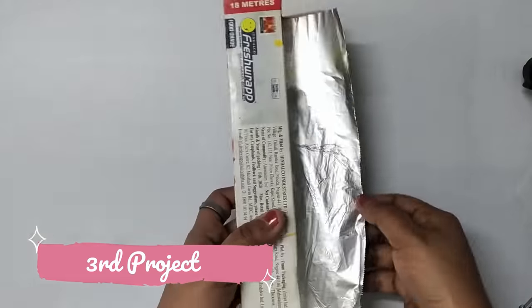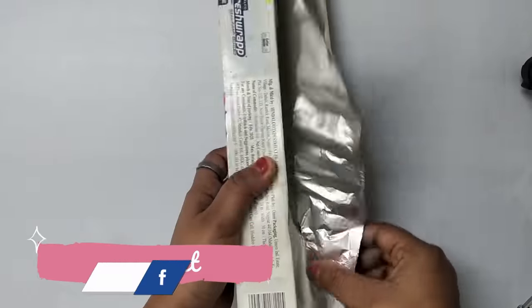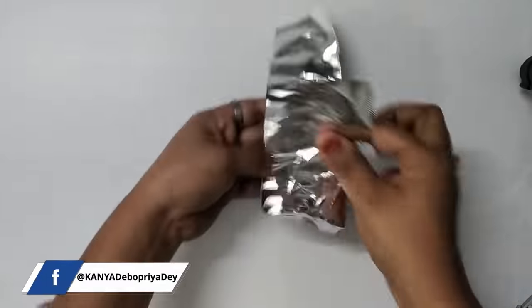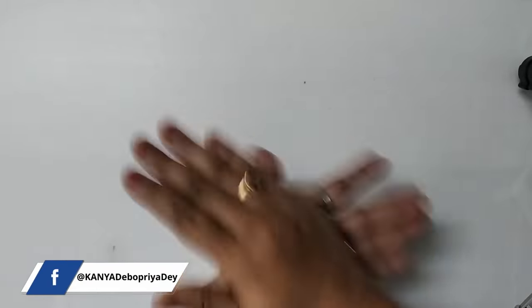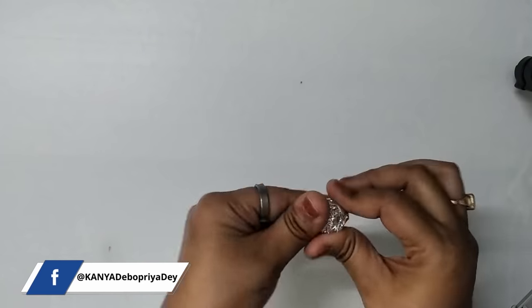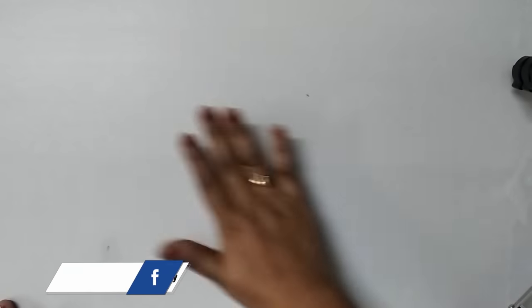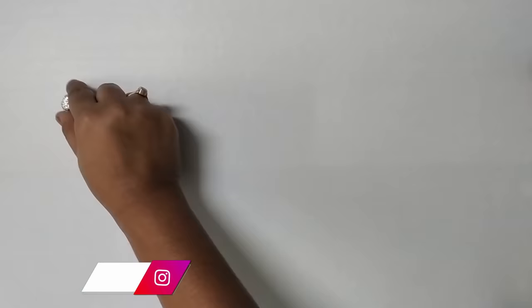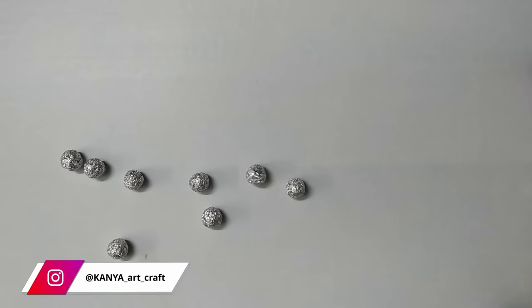Now let's move on to the third project. So here I have taken an aluminum foil sheet, cutting a 2 inch long strip, crushing it and making a ball out of it. So you need to make approximately 30 to 40 balls like this. It depends on the length of the neckpiece.